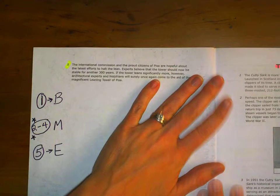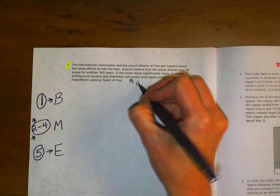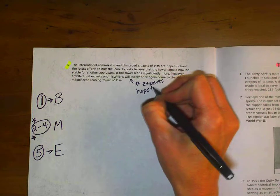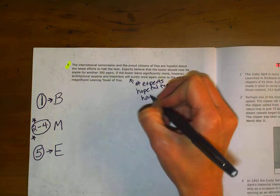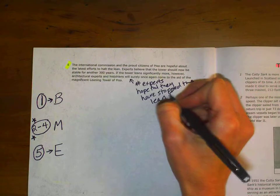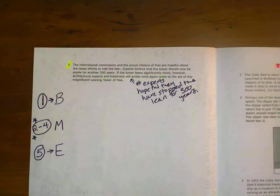Last paragraph. The International Commission and the proud citizens of Pisa are hopeful about the latest efforts to halt the lean. Experts believe that the tower should now be stable for another 300 years. If the tower leans significantly more, however, architectural experts and historians will surely once again come to the aid of the magnificent leaning tower of Pisa. Okay, so this is experts, hopeful, they have stopped the lean for 300 years.